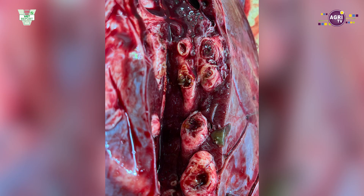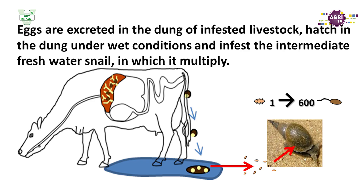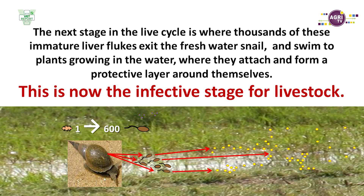This parasite has specific circumstances where it occurs. It needs an intermediate host. That means when cattle are affected, the eggs of this liver fluke go through the dung and then hatch and go into a freshwater snail. So there must be standing water and freshwater snails for this parasite to occur on the farm.